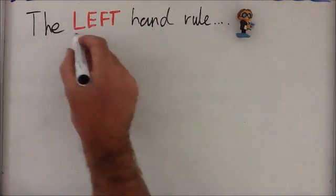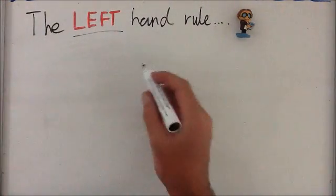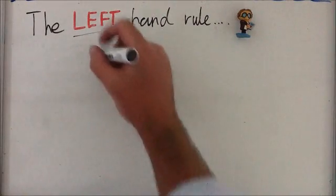The left hand rule is a great way of figuring out what's going on when we're dealing with electromagnets.